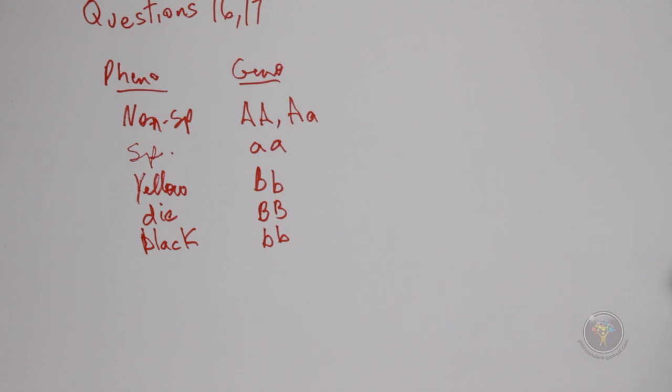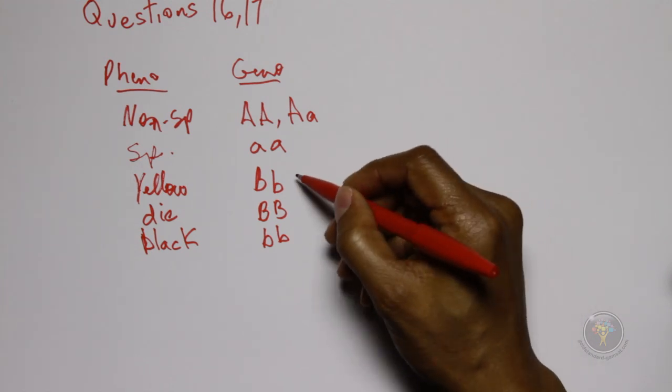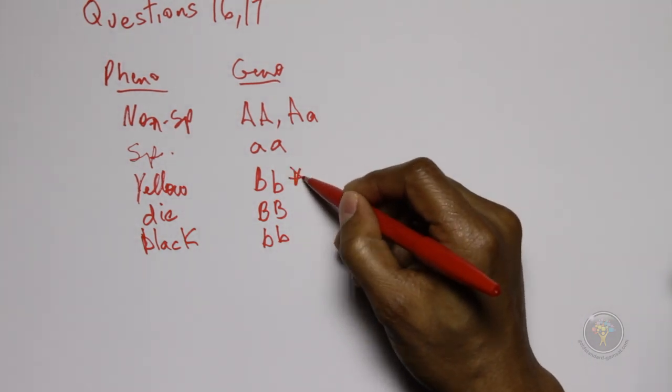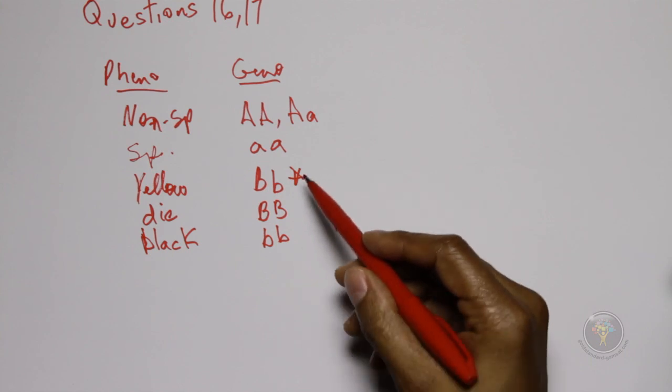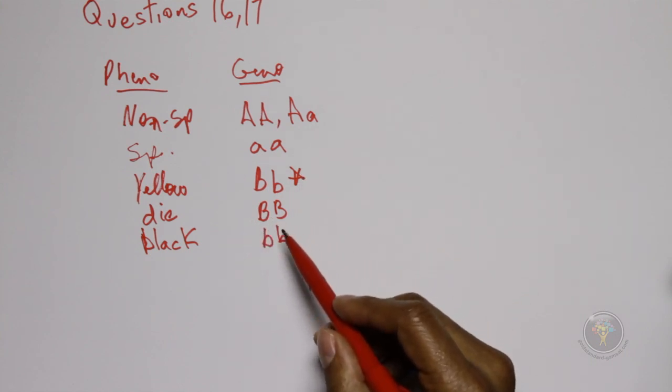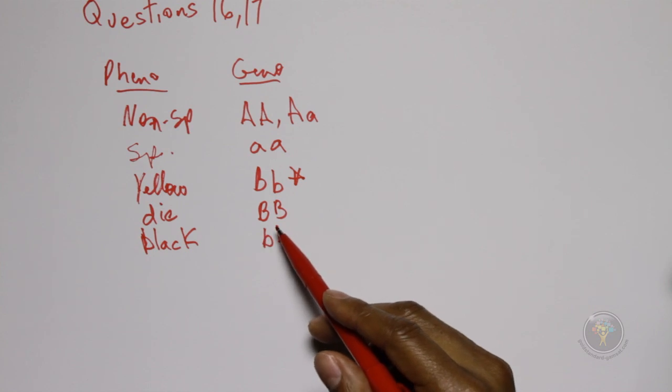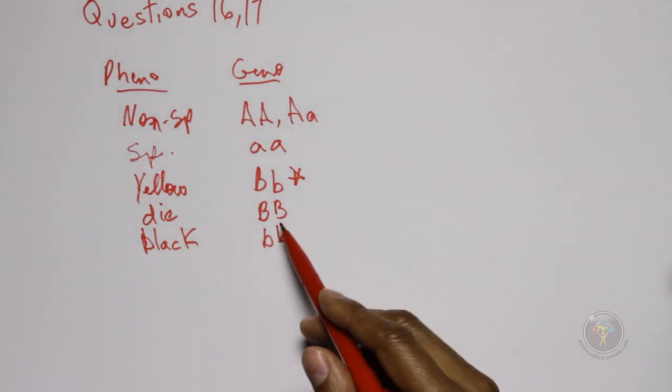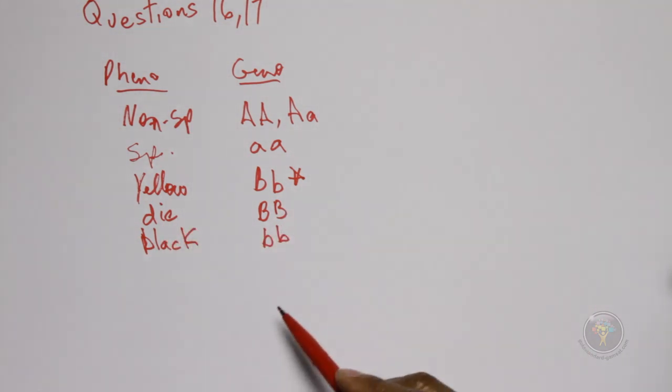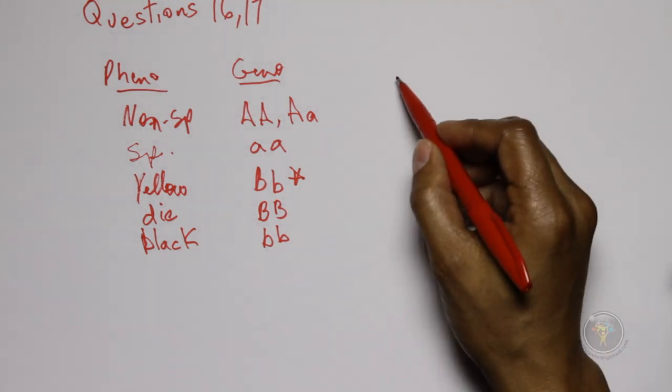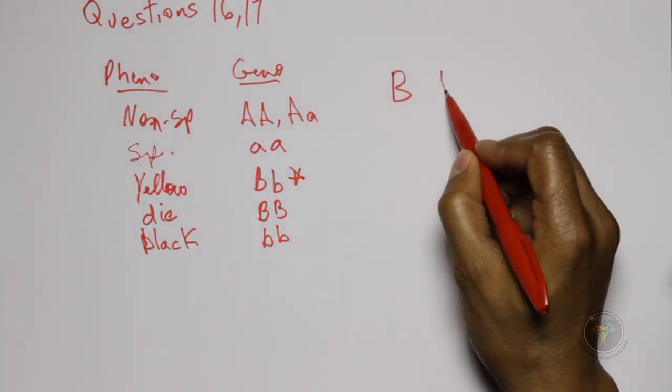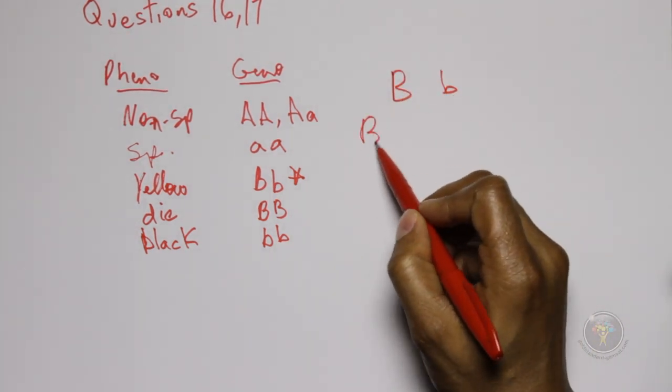Okay, so of the following, the most likely proportion for the phenotypes. So it's a cross between two yellow mice. So if we have two yellow mice, that's what we're referring to here. It's going to be two yellow mice. Obviously it can't be BB even though that theoretically could produce yellow, they die so they cannot reproduce. And obviously they're not black, so we have two yellow mice.